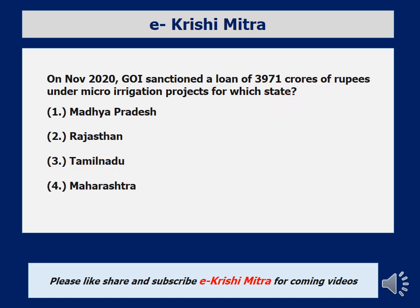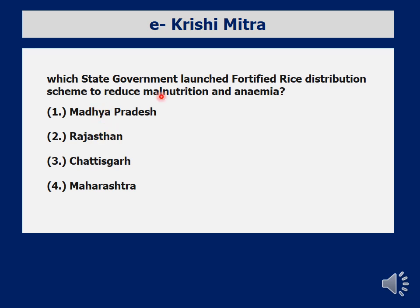Fifth question: which state government launched a fortified rice distribution scheme to reduce malnutrition and anemia? Fortified rice varieties contain more nutrients compared to normal varieties — for example, CR Dhan 310 contains about 10 to 11% protein, and DRR Dhan 45 contains about 20 ppm zinc. This fortified rice distribution scheme was launched in Chhattisgarh.